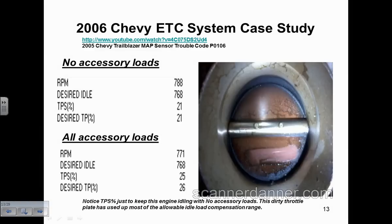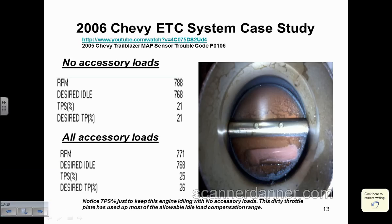Here's the discrepancy with a dirty versus clean throttle plate causing a stalling problem. On a system where the computer has complete control of the throttle plate — from zero to 100% throttle opening — how can dirty throttle plates cause a stalling problem when the computer has complete control of this device?